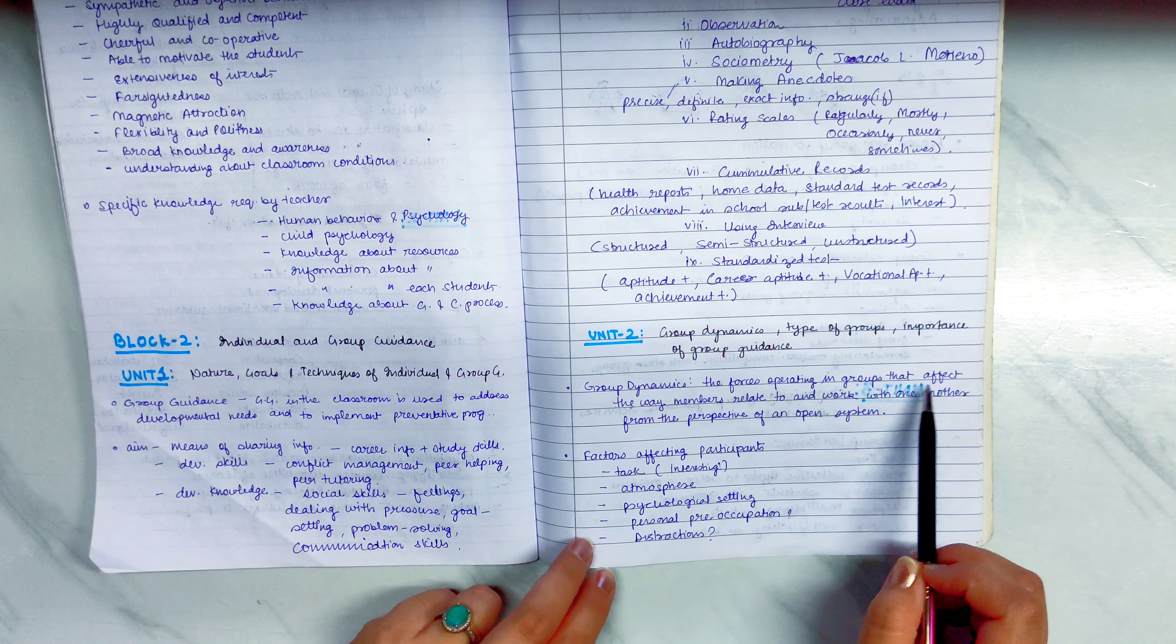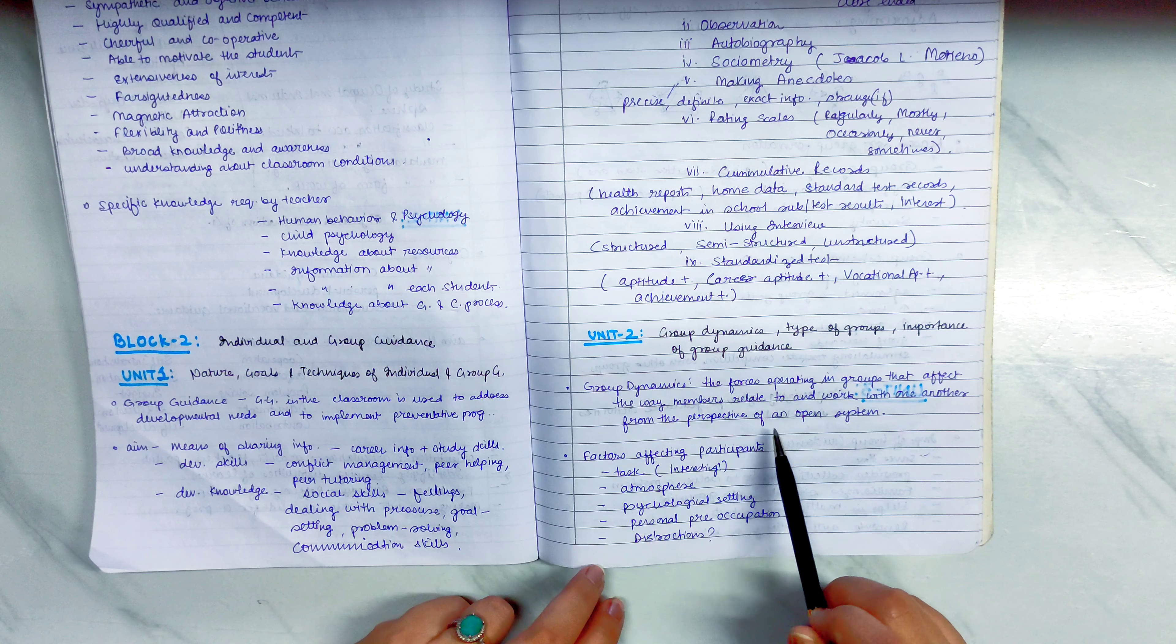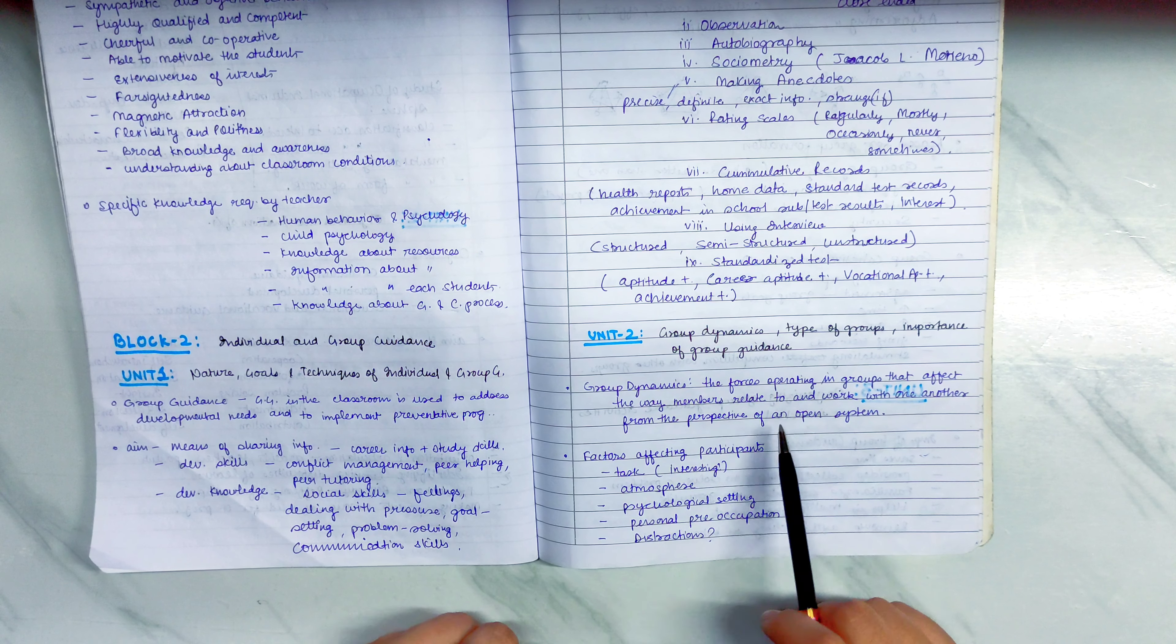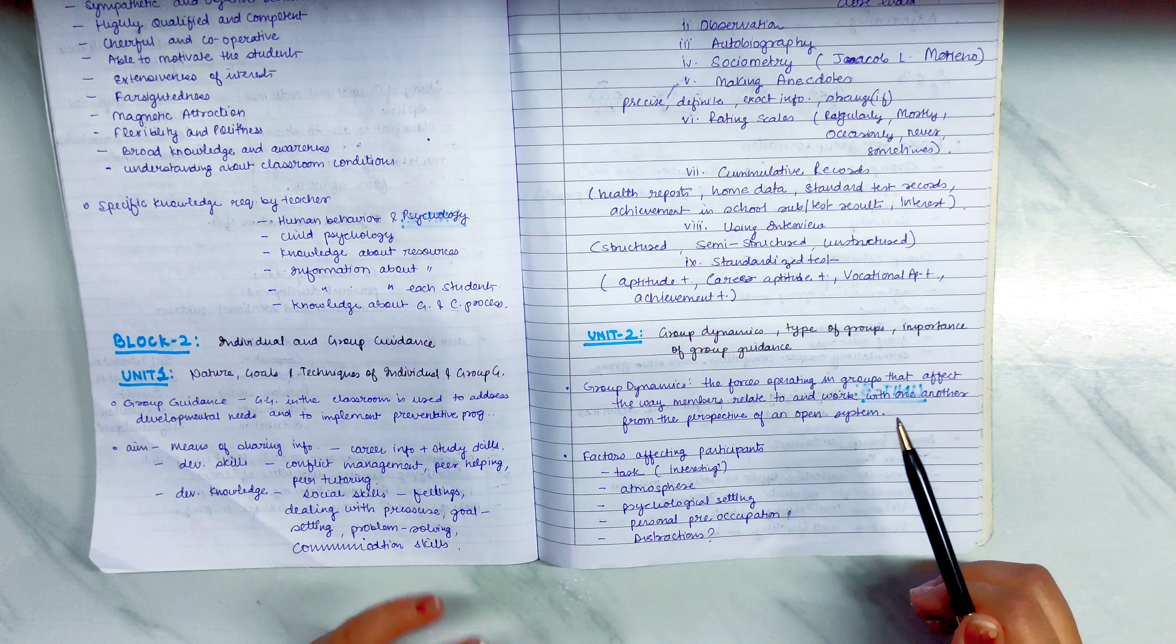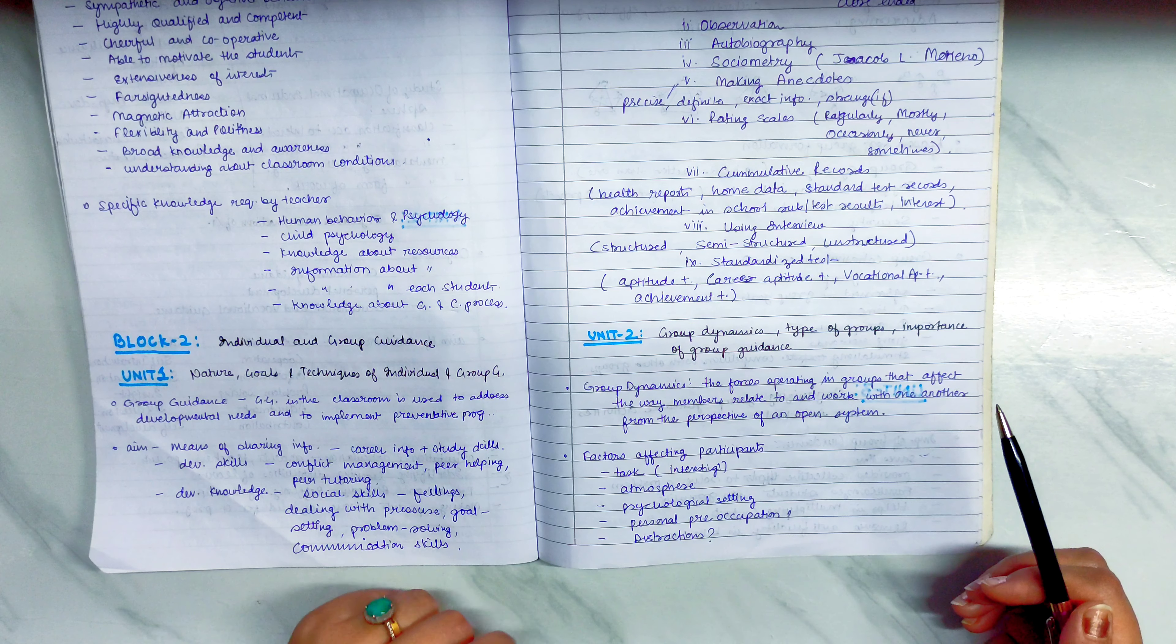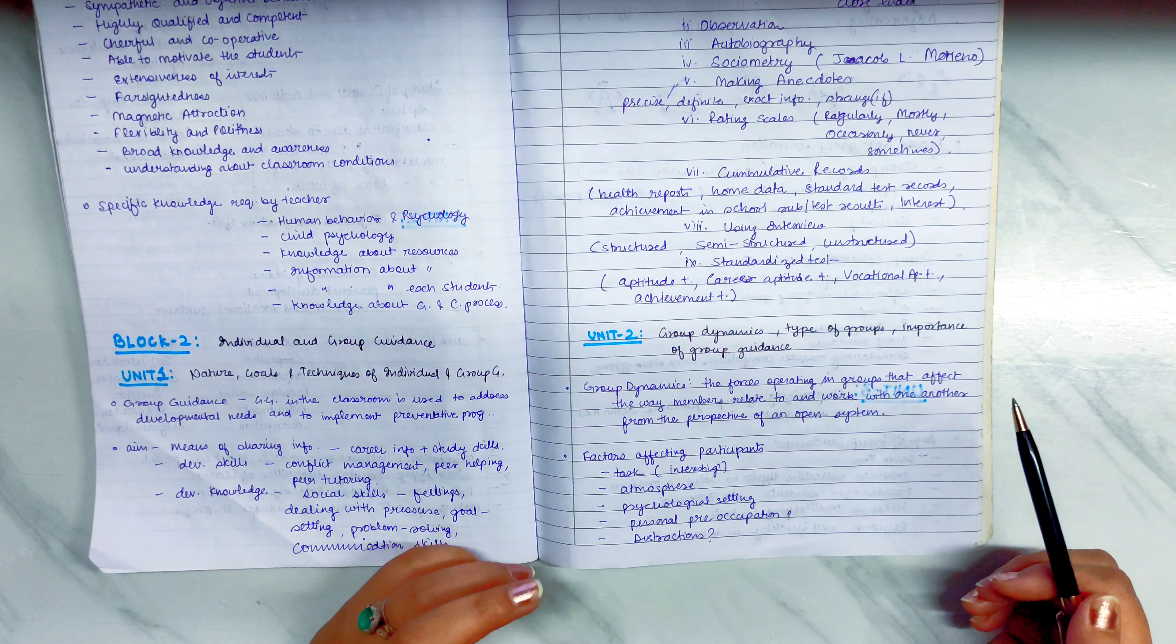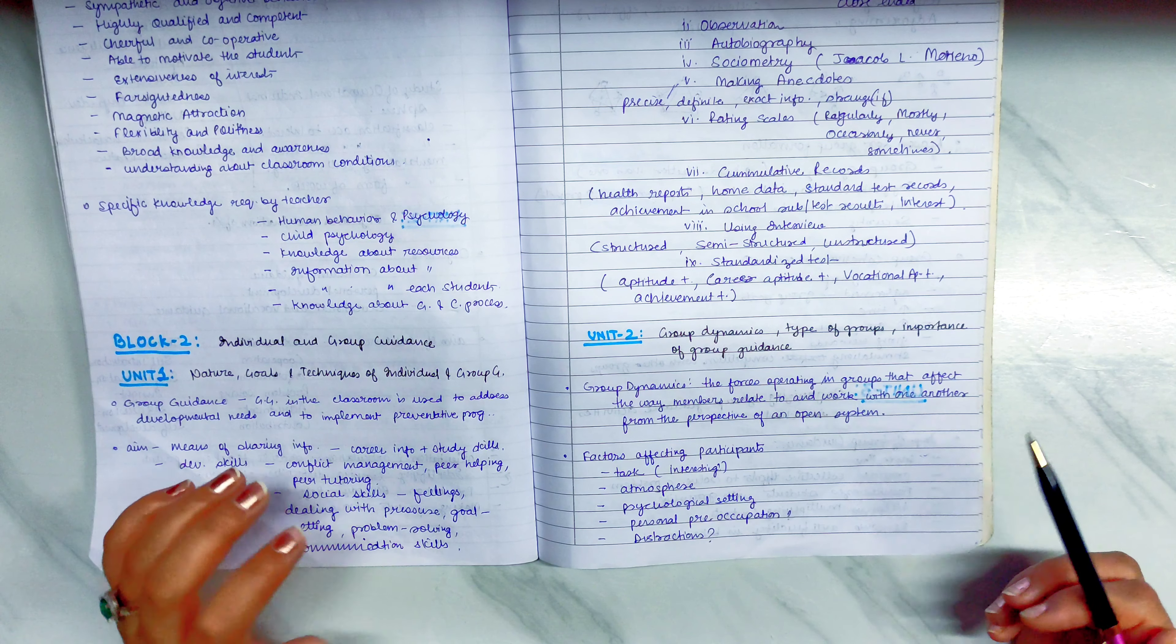The forces operating in groups that affect the way members relate to and work with one another from the perspective of an open system. So, Group Dynamics is basically as a group of 10 children. Within all groups they are all together. These are all Group Dynamics.